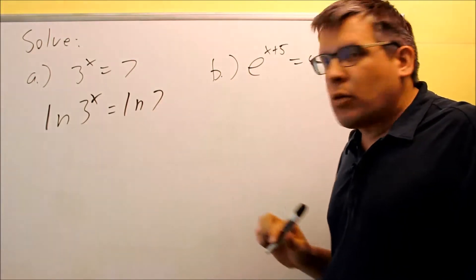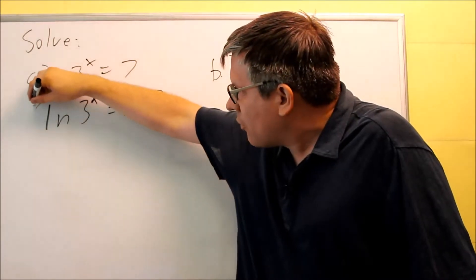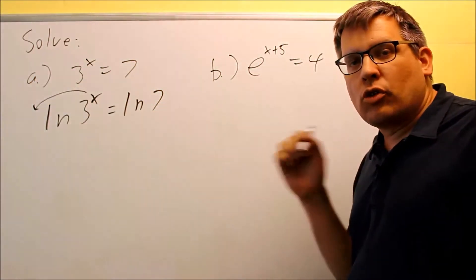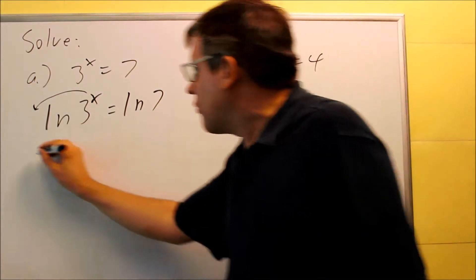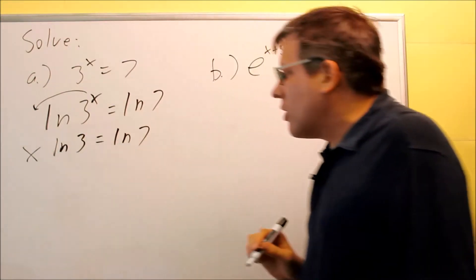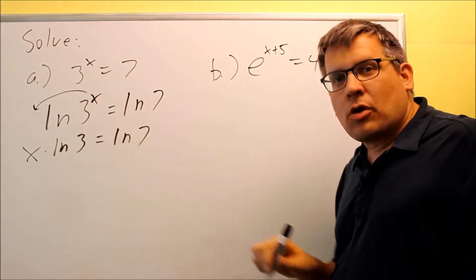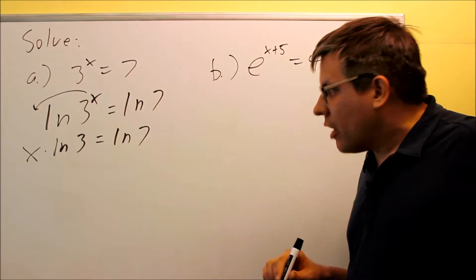The reason why you want to do that is because this allows us to move the x down in front because of that log property, rule number 5. By bringing that down front, we have x ln 3 down in front. Now because x is a factor, we can divide both sides by ln 3 and get our answer.